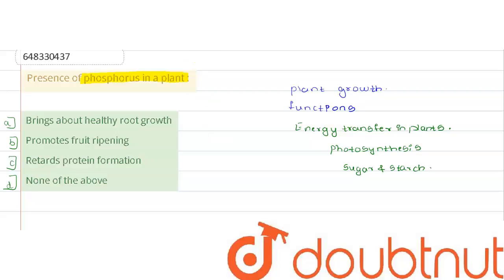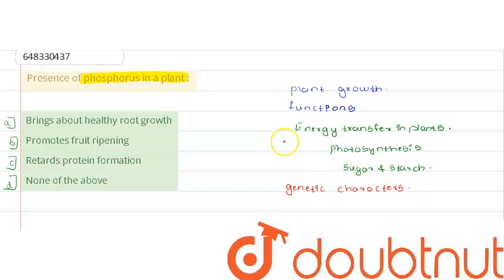Phosphorus helps in the transfer of genetic characters from one generation to the next generation. So, by seeing all this information and these options, Option A — bring about a healthy root growth — is the right answer for this question.